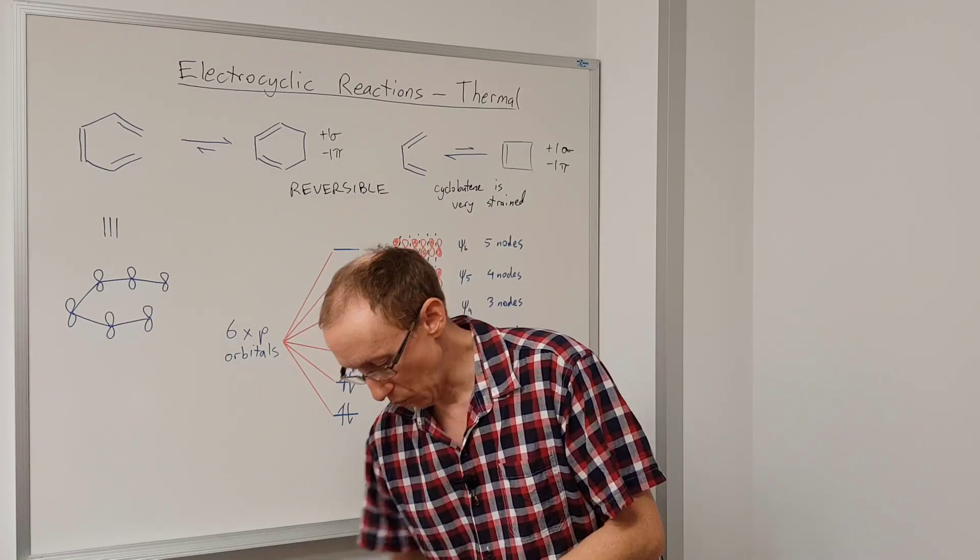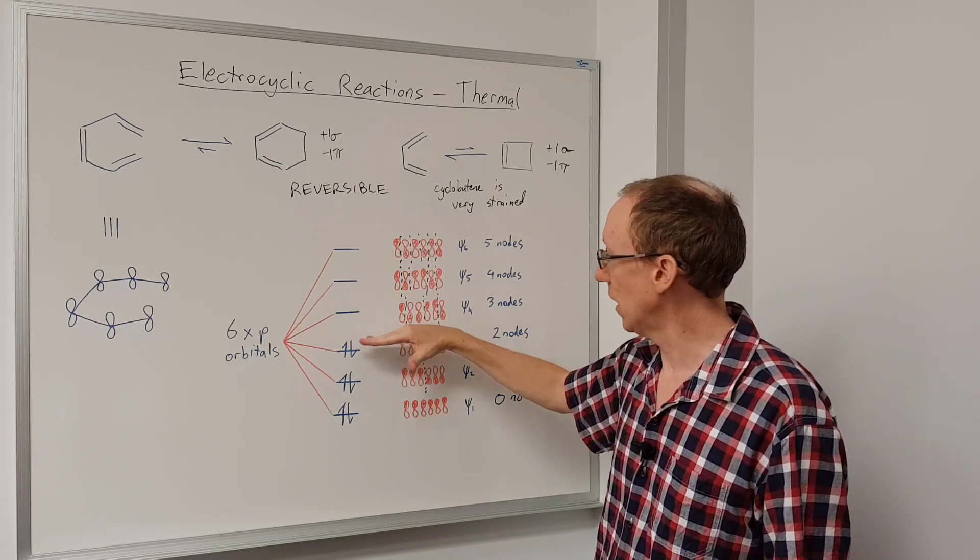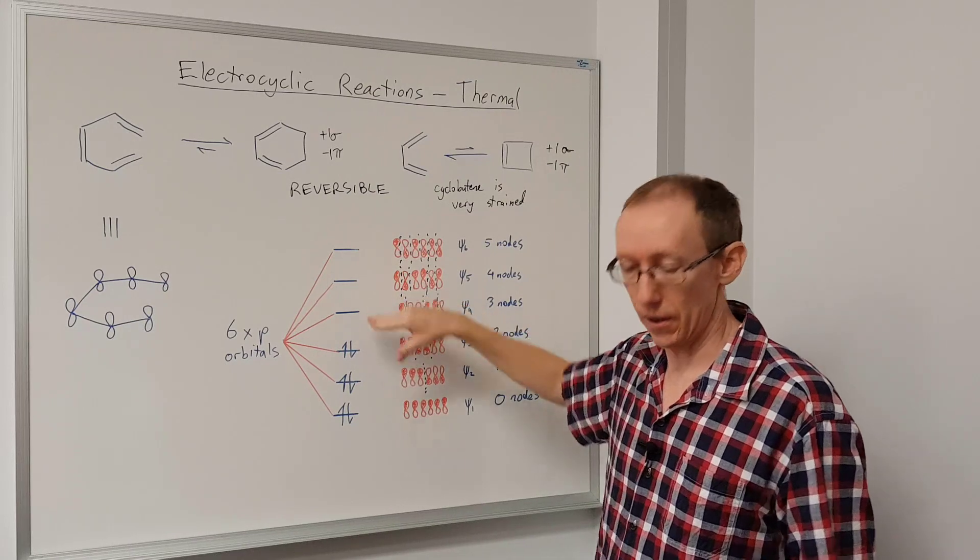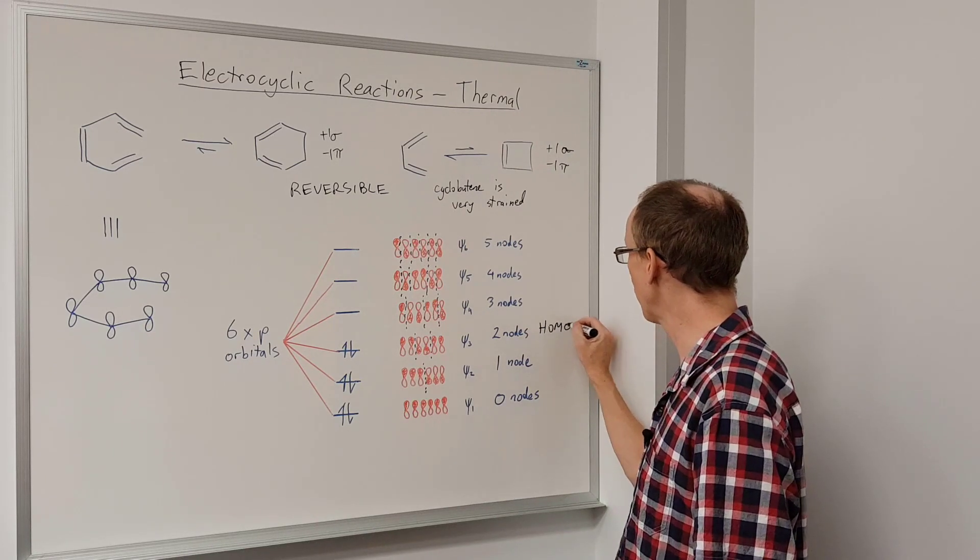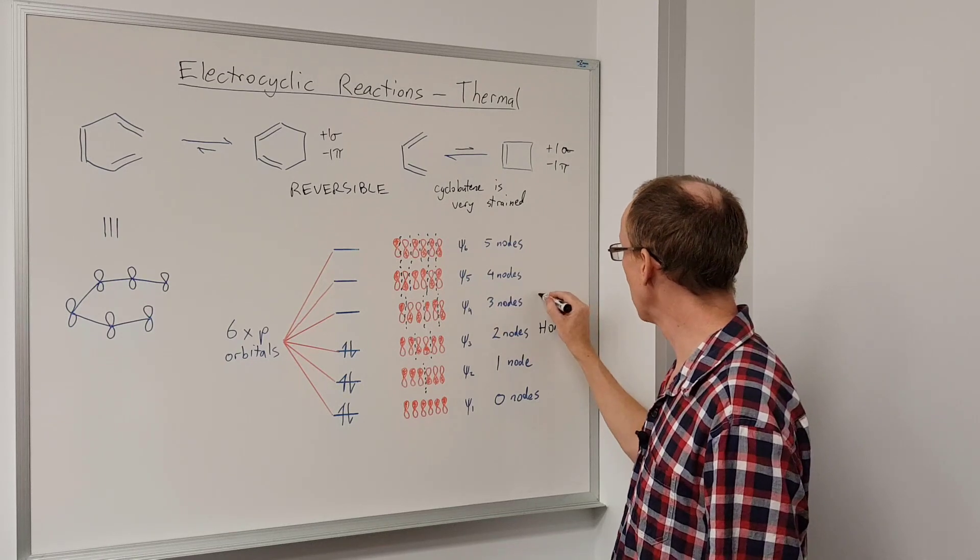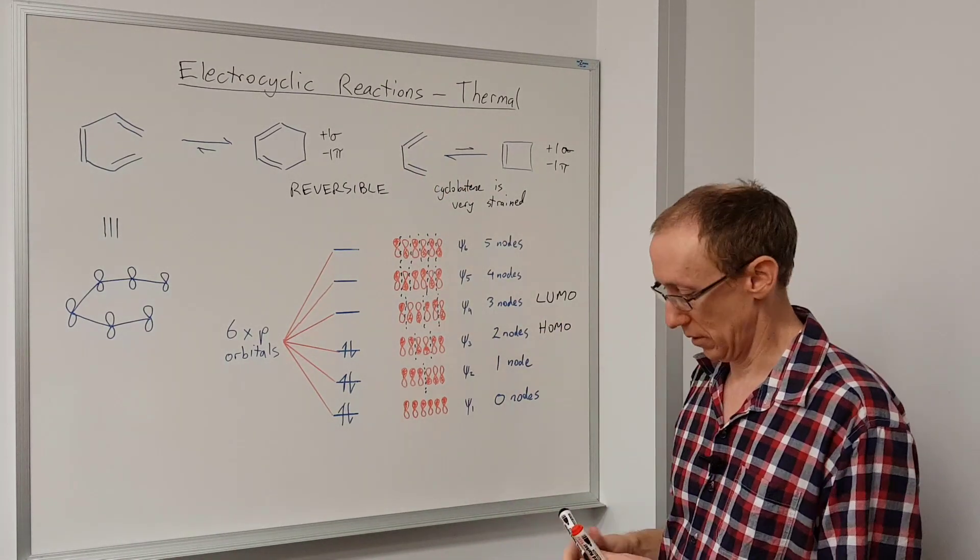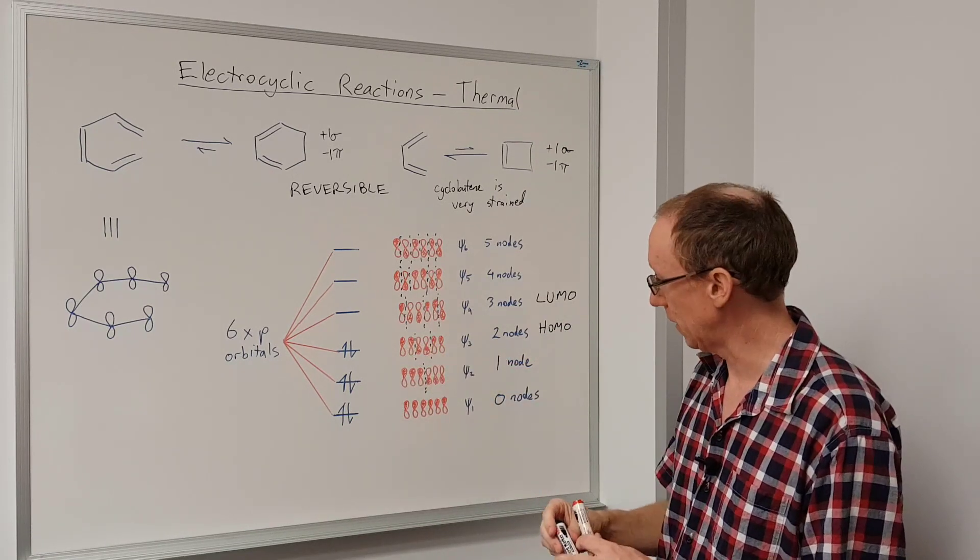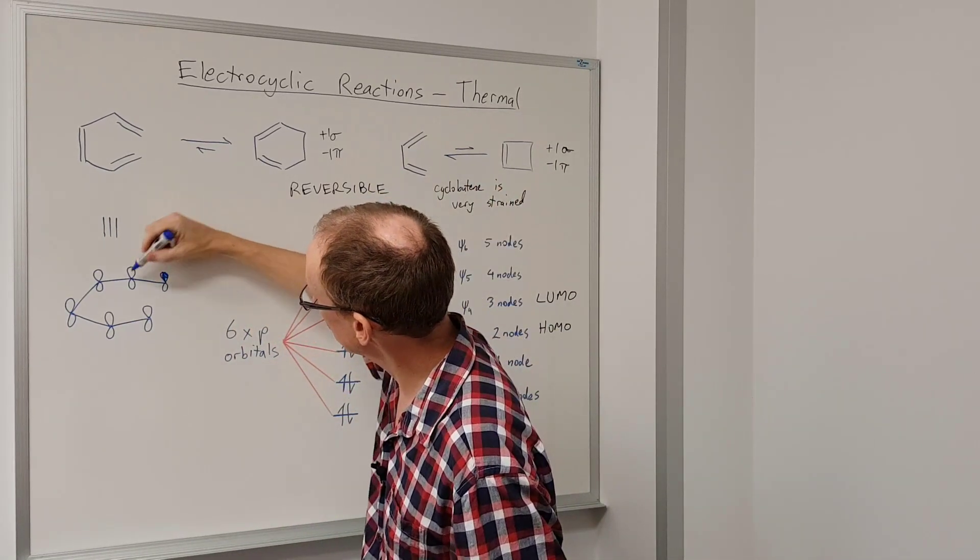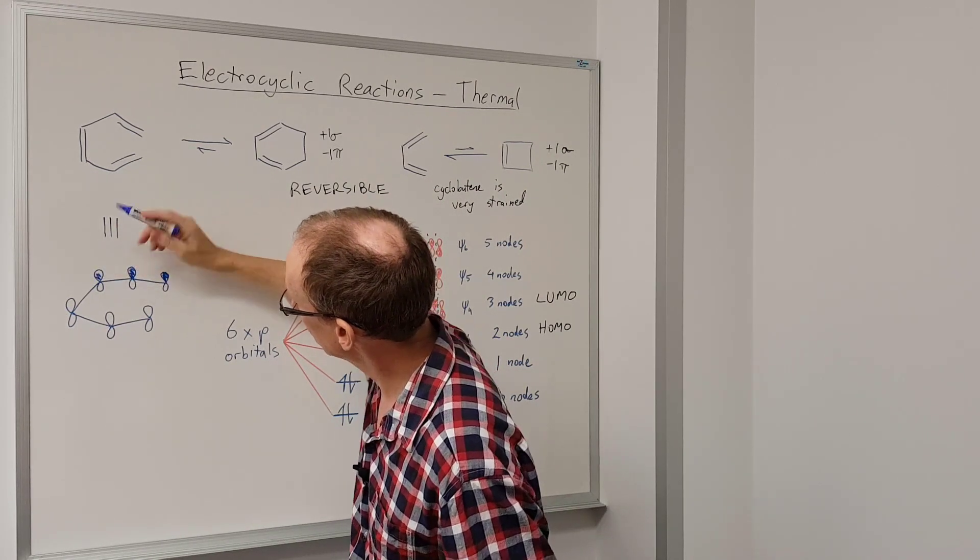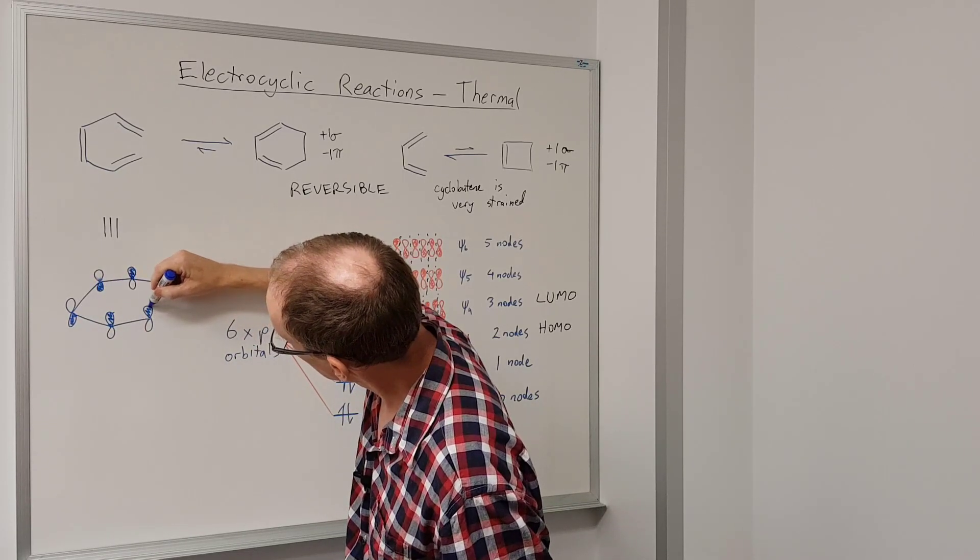And then we're normally most interested in what are called the frontier molecular orbitals. So this is the orbitals that are the highest occupied molecular orbital and the lowest unoccupied molecular orbital. If we label those, this will be the highest occupied molecular orbital or the HOMO, and psi four will be the lowest unoccupied molecular orbital or the LUMO. And for electrocyclic reactions, we're interested in the HOMO. So if we look at this, we've got this arrangement of phase. So let's go back to our earlier diagram and just color these in.